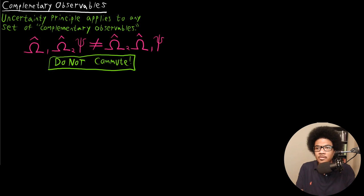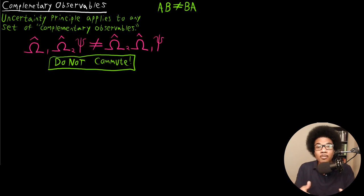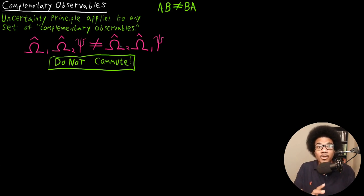If you're familiar with linear algebra, you already have a sense of this non-commutation property. In general, in linear algebra, if you have matrices A and B, it's not necessarily true that AB will equal BA. When we're dealing with just numbers, of course, it will always commute — five times three equals three times five. But when you're dealing with operators, they may not always commute. And when they don't commute, that means the operators are complementary.